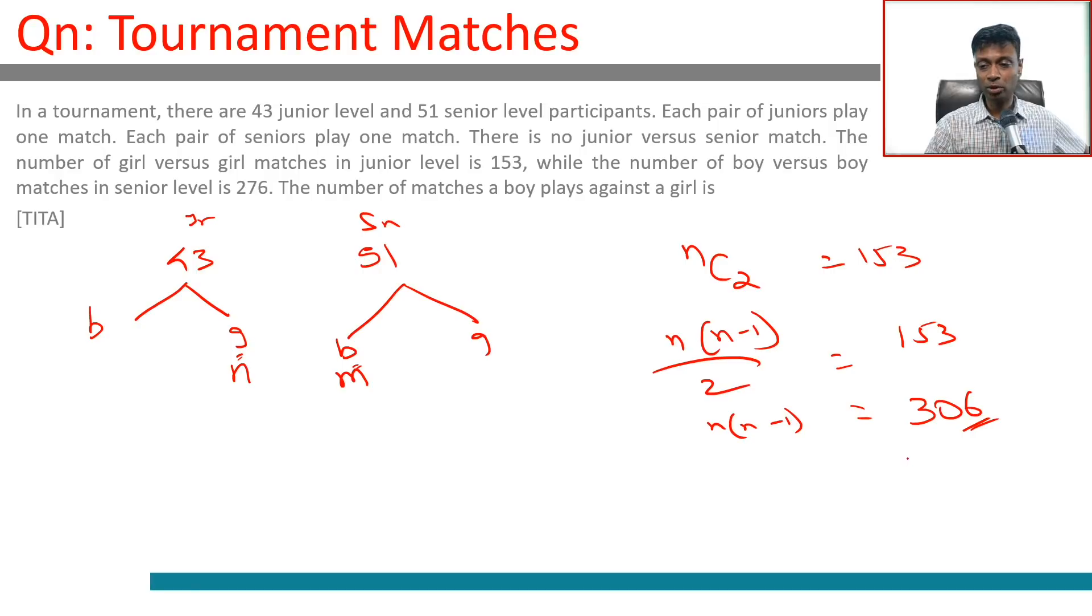Don't factorize this and do something with a quadratic equation. Product of two consecutive numbers is 306. 306 is a multiple of 9, so we have 18 into 17. That should work, it does. So there are 18 girls in this, 43 minus 18 is 25 boys.